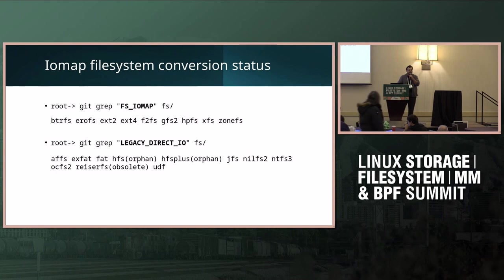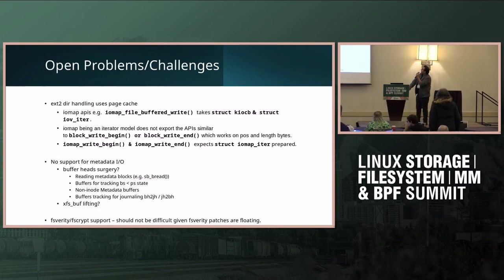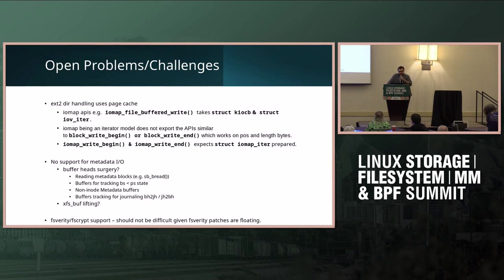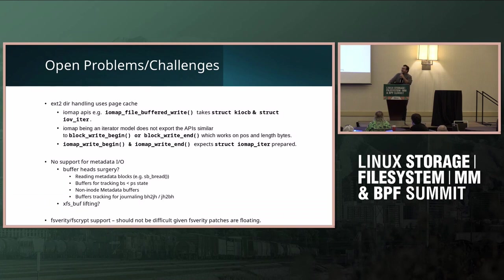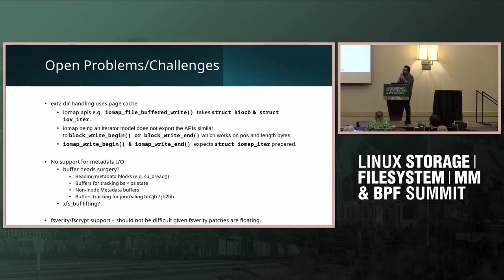Moving to open problems and challenges: while converting EXT2, I found that directory handling uses the page cache and currently uses block_write_begin and block_write_end APIs, which work on position and length bytes. I was thinking we could export iomap_write_begin and iomap_write_end APIs, and have helper functions to prepare an iomap_iter so that EXT2 directory handling can be converted. That's an open problem and I wanted to know whether that is the right approach.